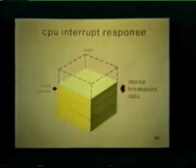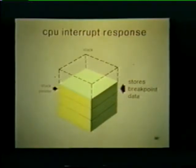An interrupt can only occur between instruction cycles. Therefore, if the CPU happens to be in the middle of an instruction, it first completes execution of that instruction, then stops. Before the CPU services this interrupt, it takes breakpoint data — information that will allow it to return to the proper point in the employee listing program — and stores it on a hardware stack. This hardware stack is implemented in PDP-11 memory and will be described in detail in subsequent study units.